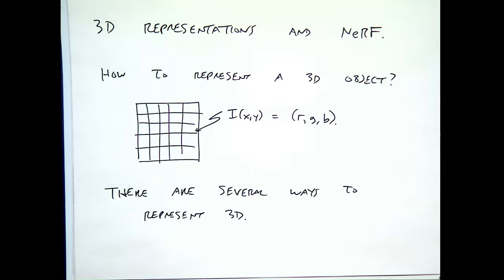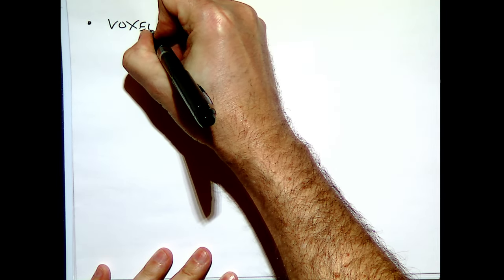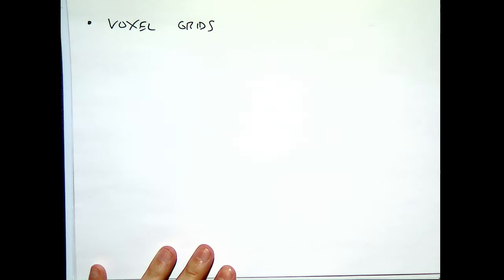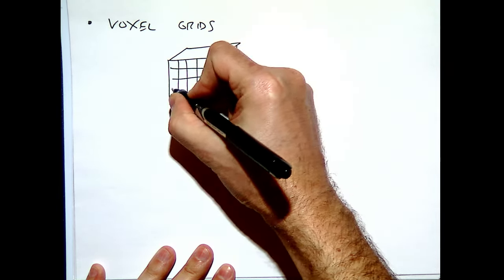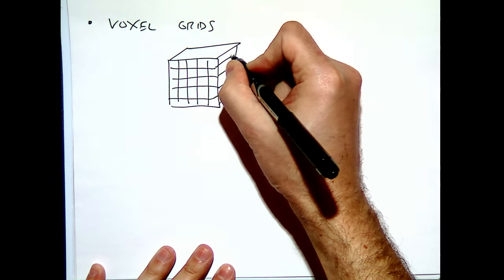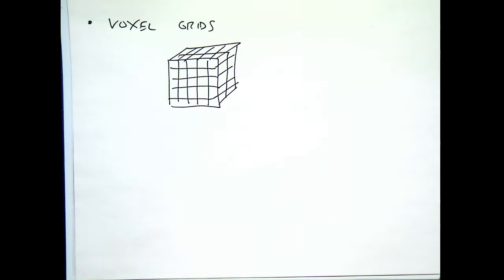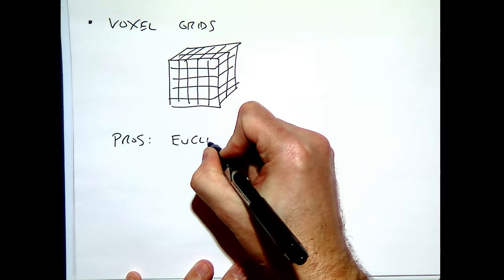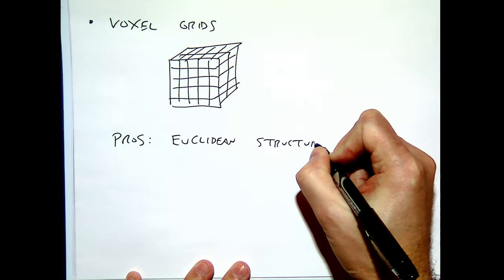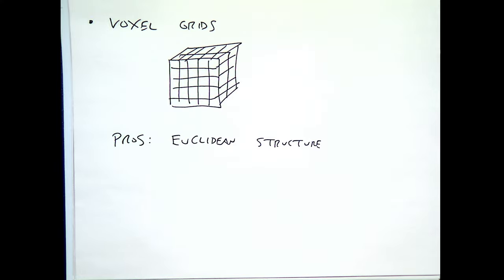The most natural extension from image to 3D is what's called a voxel grid. Voxel grids are, in some sense, the most natural extension of images — instead of a simple 2D image, we extend this to a rectangular solid of voxels. The obvious pros are that this Euclidean, evenly-spaced structure naturally extends to all existing neural network techniques. We can semi-directly extend 2D techniques, and in particular, a natural extension is convolutional neural networks — instead of a 2D receptive field, you now have a 3D receptive field.